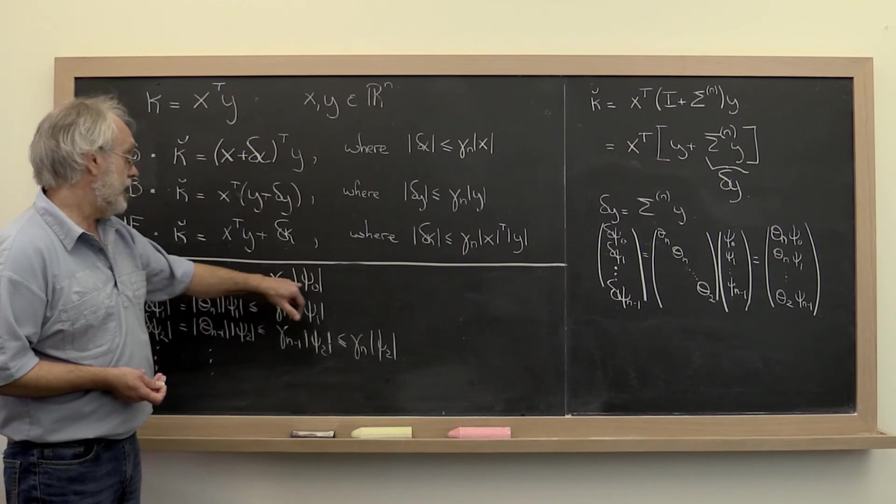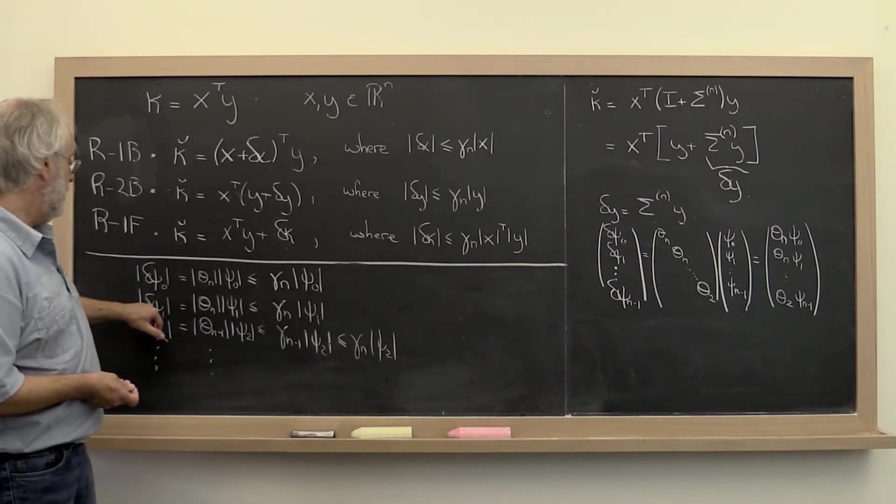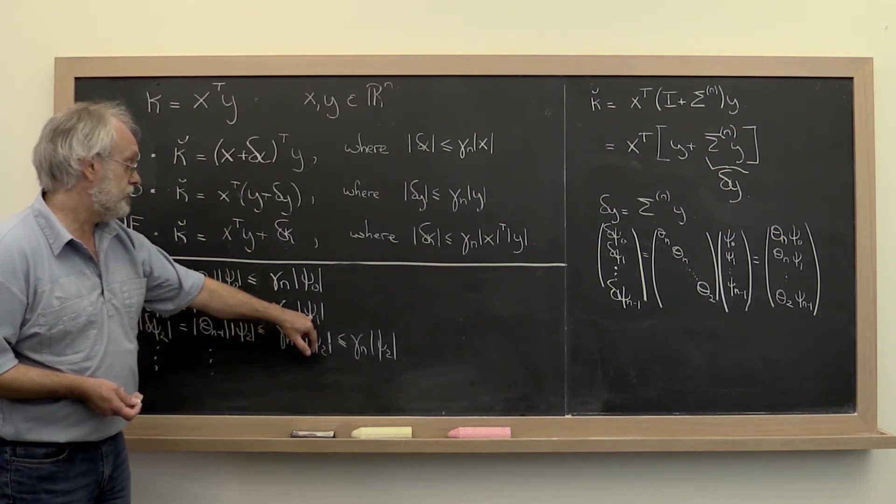But we saw that theta n in absolute value was bounded by this magic number we created, gamma n. So we end up with gamma n times the absolute value of psi 0. We can then do the same thing for delta psi 1 and bound it by gamma n times the absolute value of psi 1.